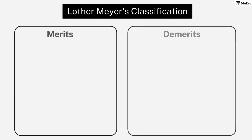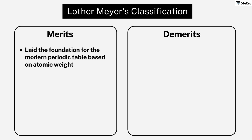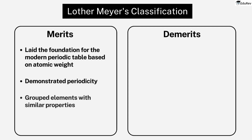Let's quickly review the merits, demerits, and conclusion of Meyer's classification. The merits of Meyer's classification include its role in laying the foundation for the modern periodic table, its demonstration of the periodicity of the elements, and its grouping of elements with similar properties. Meyer's work provided a framework for later scientists to build upon and contributed to our understanding of the elements and their properties.